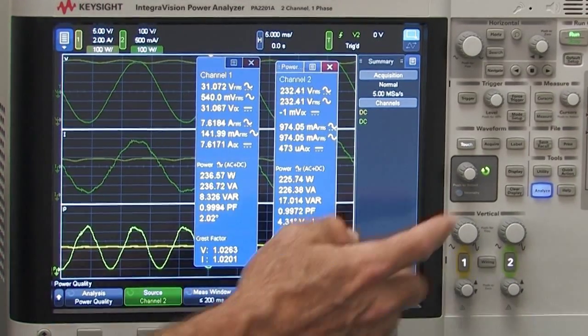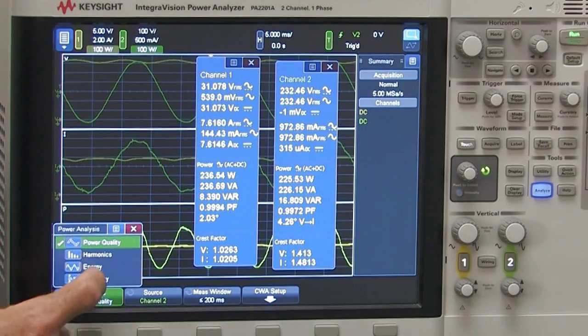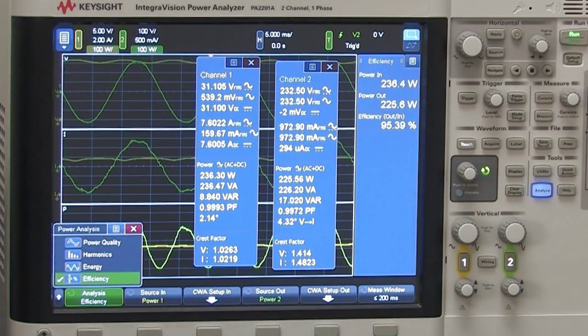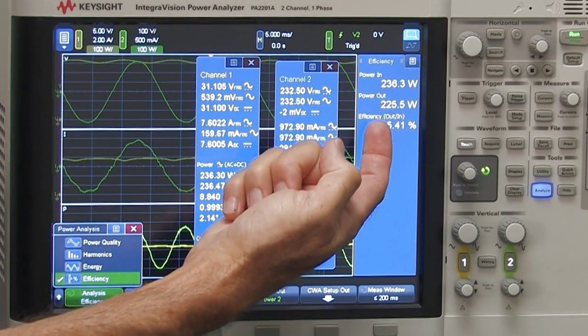So if I change the analyze screen from power quality over to efficiency, we see input power 236.